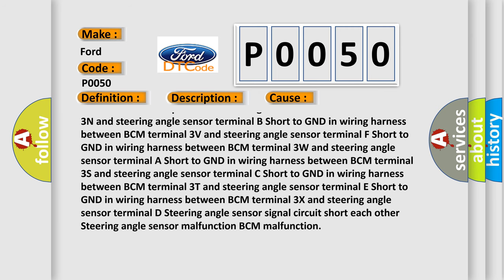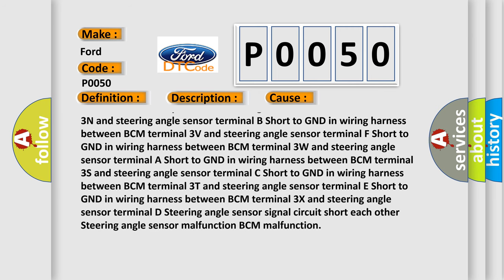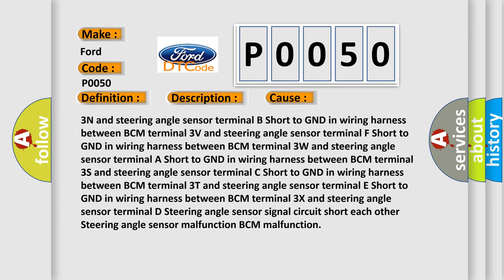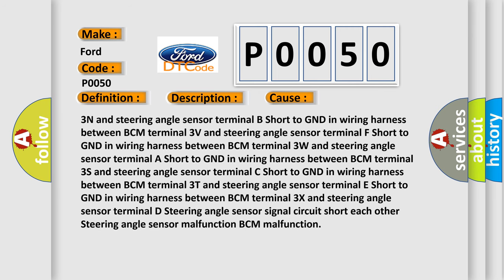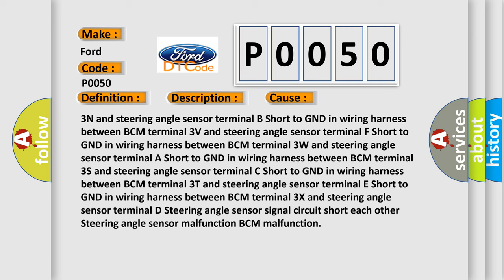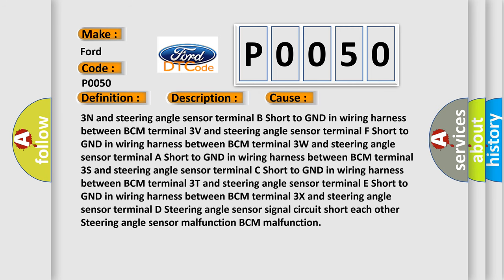Short to GND in wiring harness between BCM Terminal 3T and steering angle sensor terminal E. Short to GND in wiring harness between BCM Terminal 3X and steering angle sensor terminal D. Steering angle sensor signal circuit short to each other, steering angle sensor malfunction, or BCM malfunction.